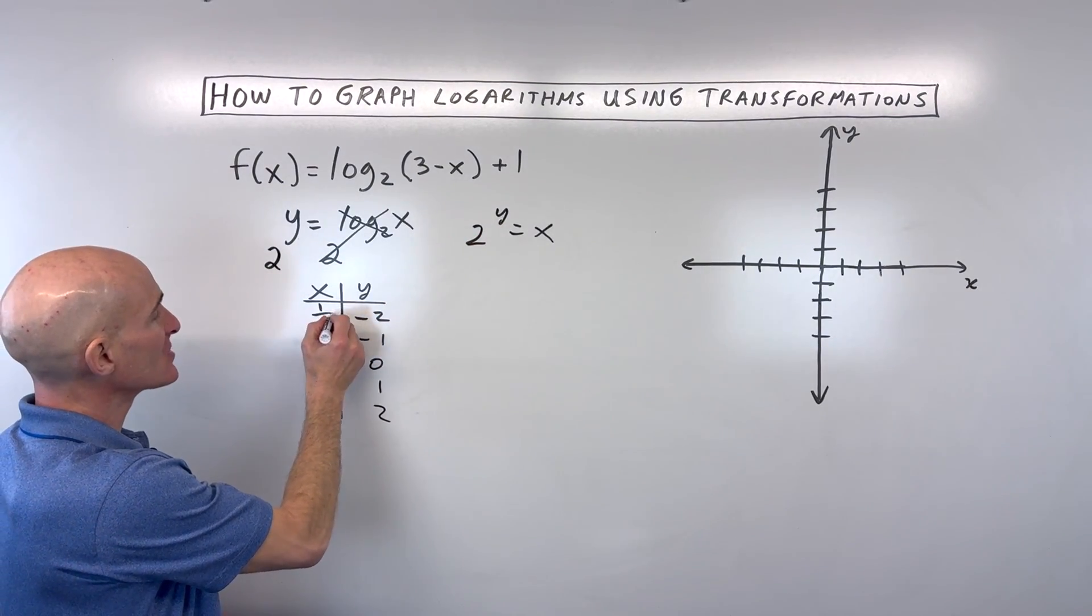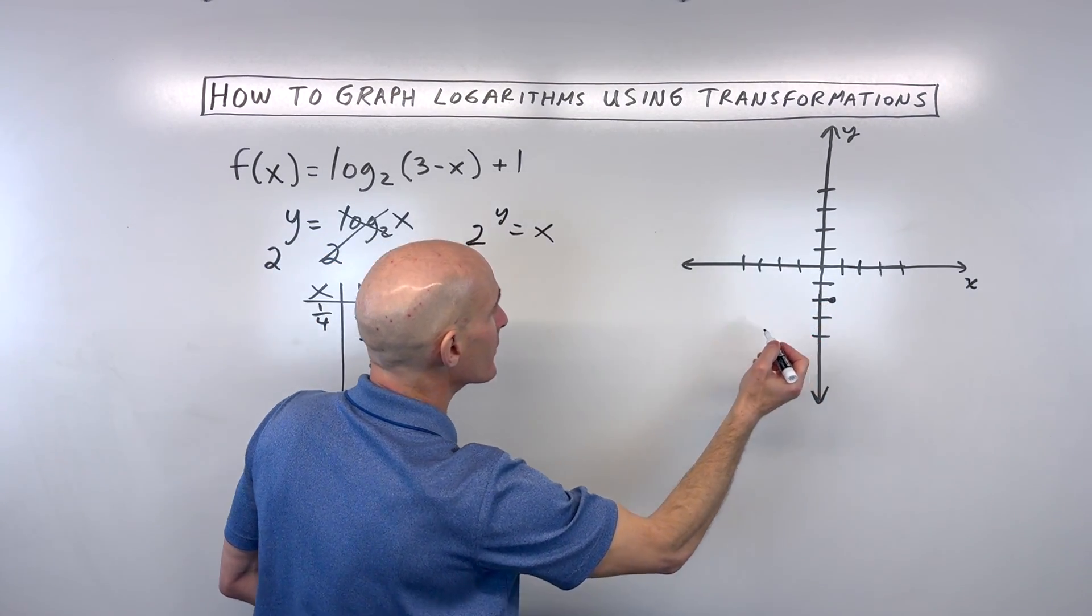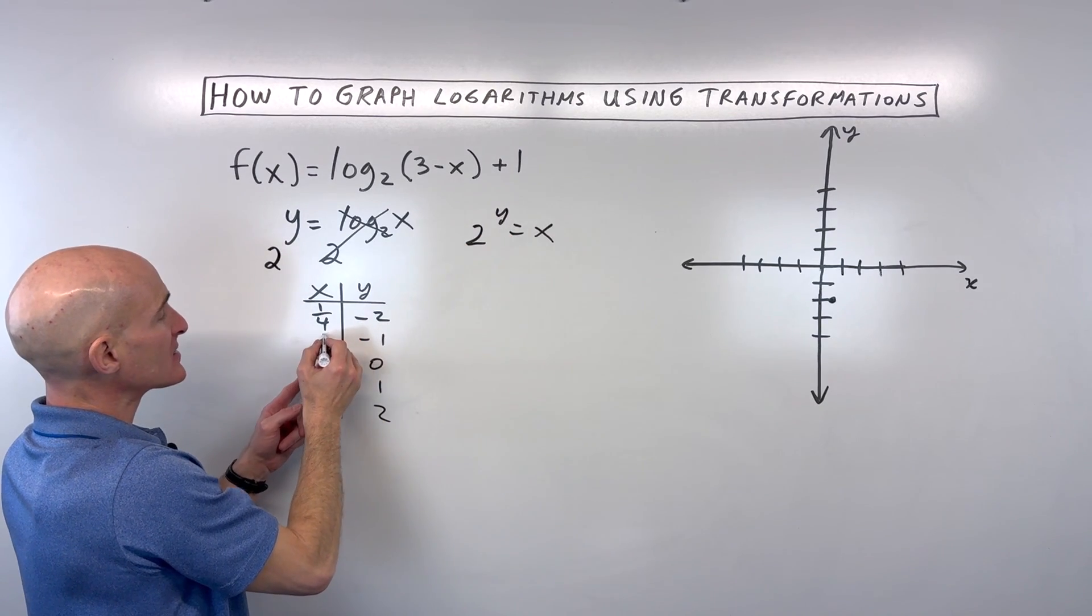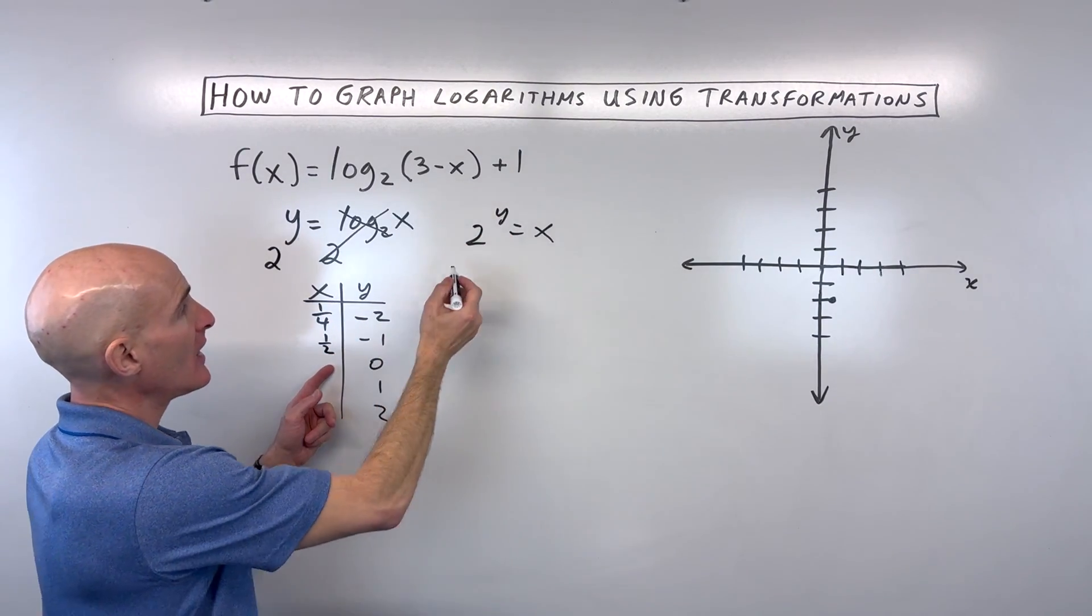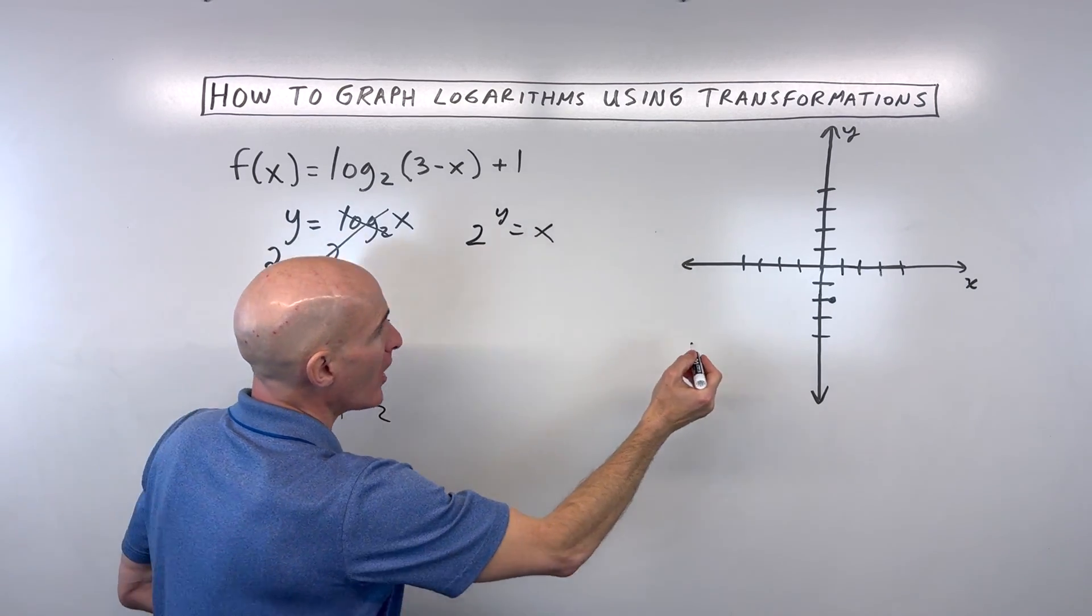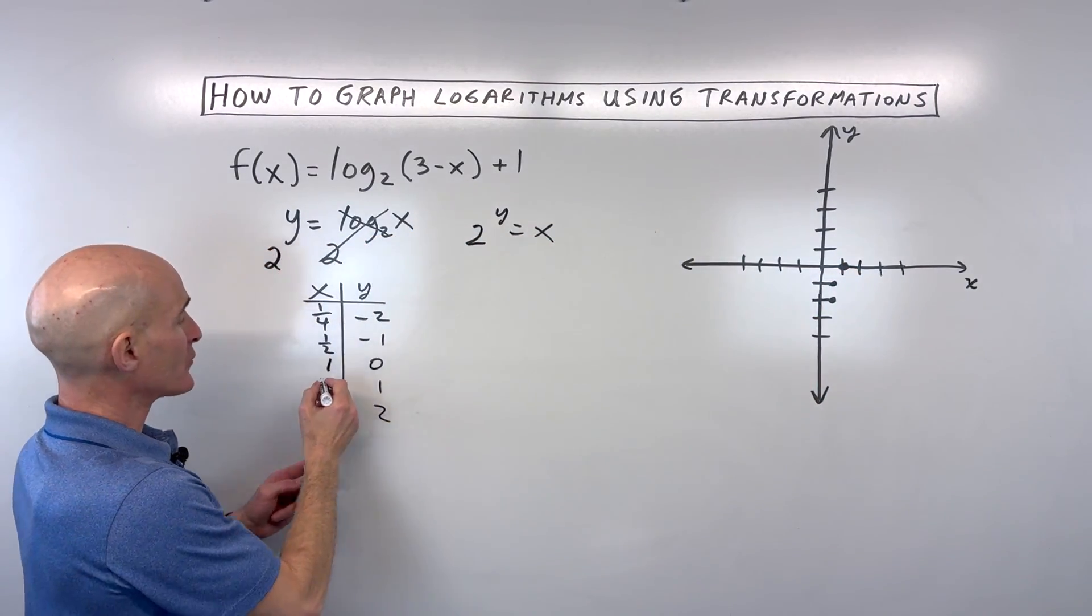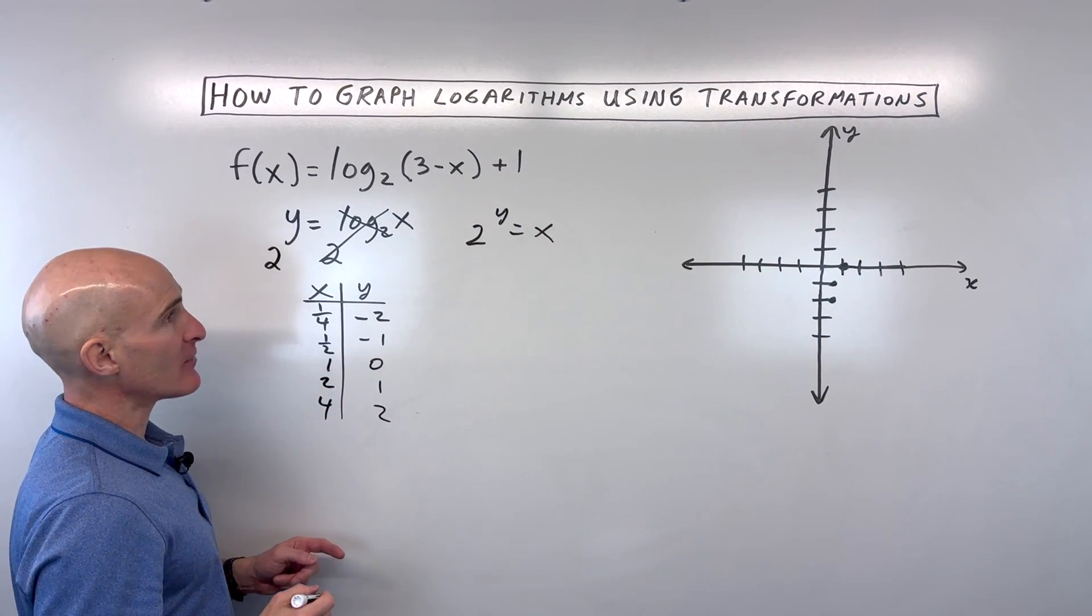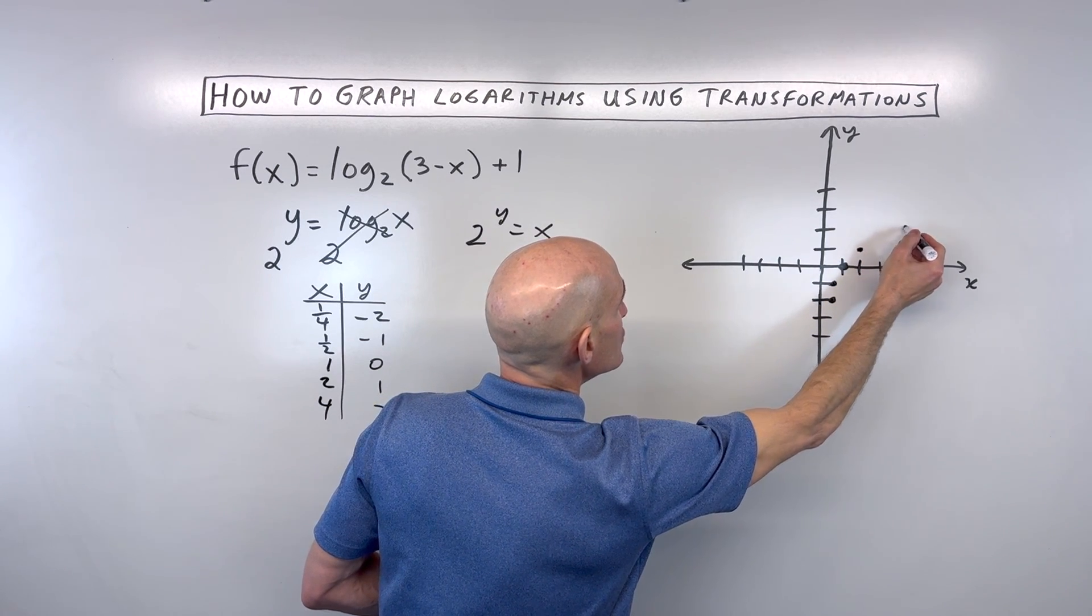The negative exponent we take the reciprocal so that's 1/4. Let's plot these points as we go, and if we put negative 1 in, 2 to the negative 1 that's going to be 1/2 because 2 to the first is 2, the negative you take the reciprocal, anything to the zero power is 1. Anything to the first power is itself and anything to the second power, 2 squared is 4.